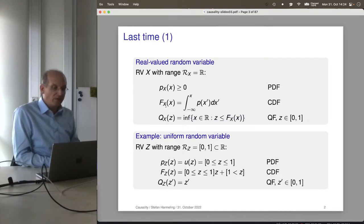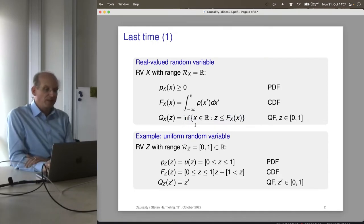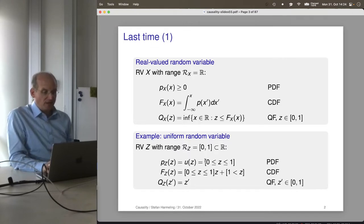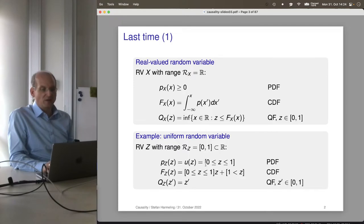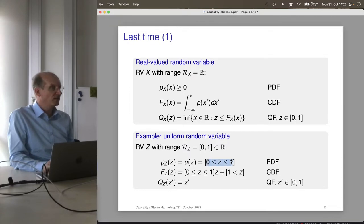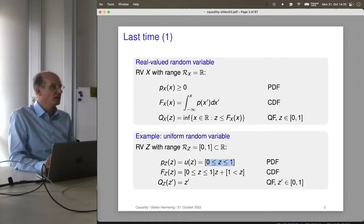As an example, we looked at the uniform random variable, ranging on the real numbers from 0 to 1. It has a particular density which we call u of z. We can also write it with Iverson brackets — these evaluate a boolean expression inside, returning 1 if true and 0 if false, so it's just like an indicator function without the indices.